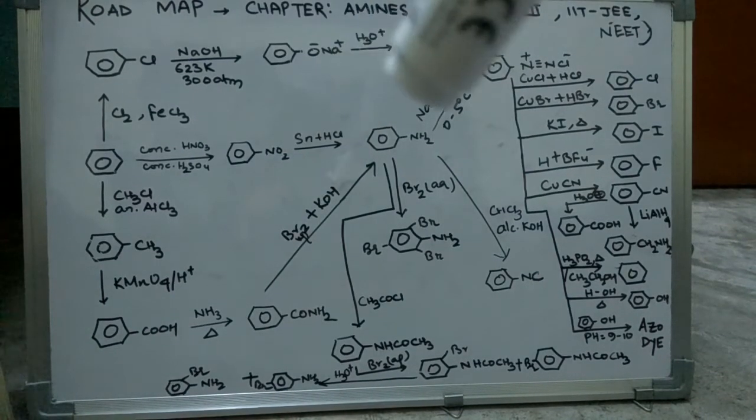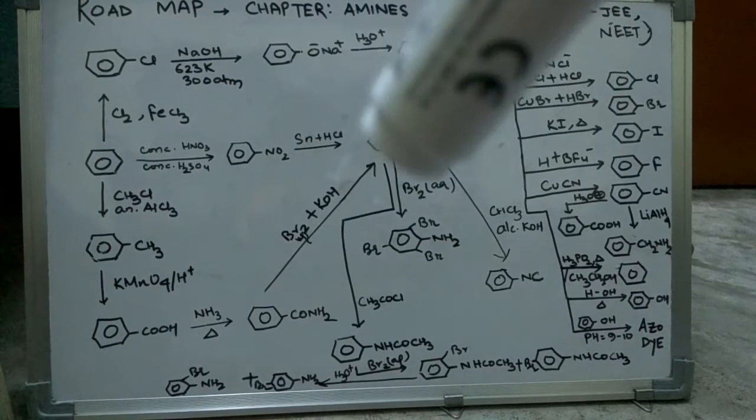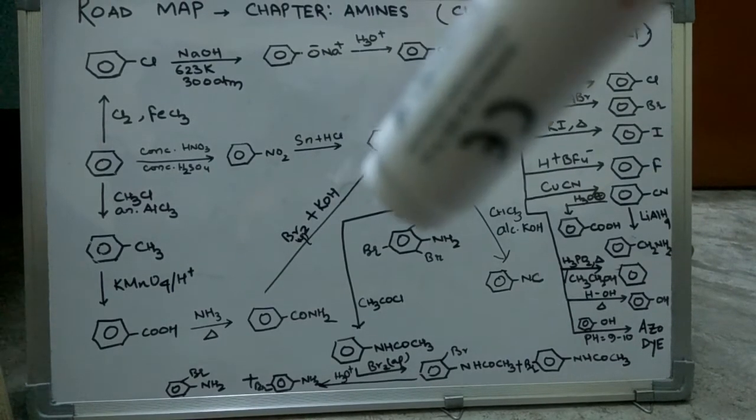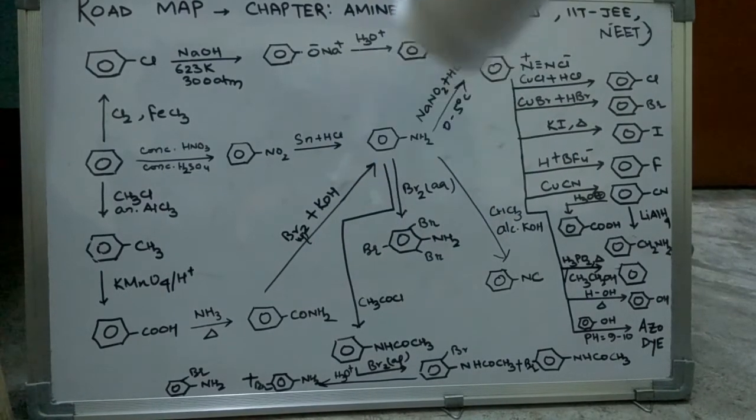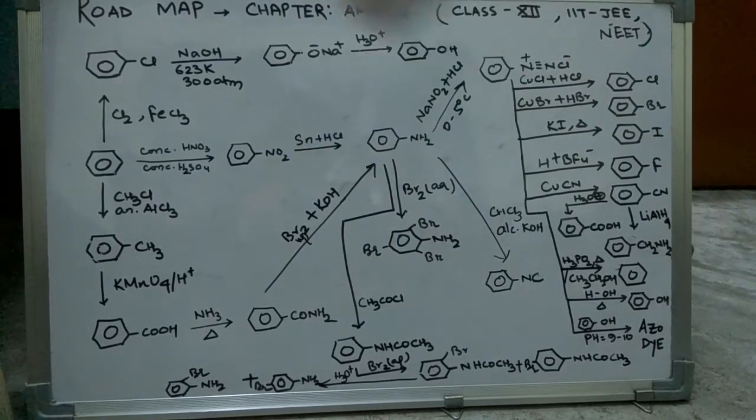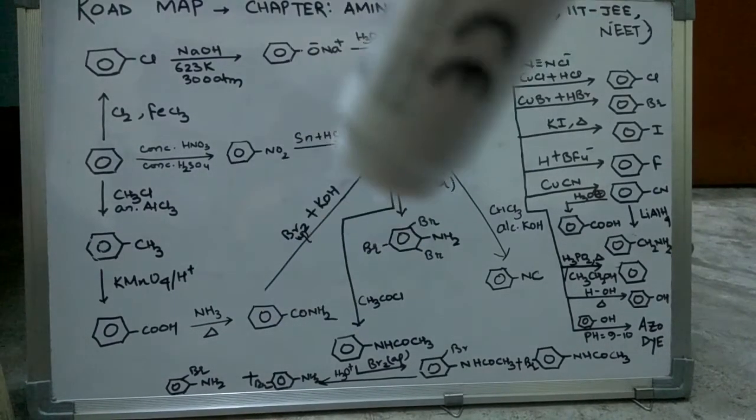Upon heating with NH3, we get the side group as CONH2, which is shown. Now upon adding Br2 aqueous plus KOH, we get aniline.